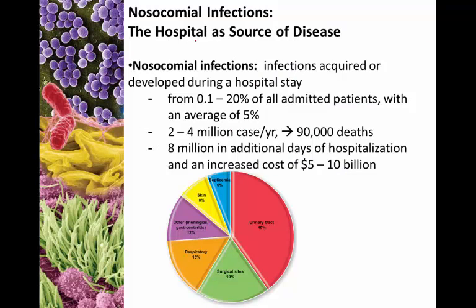The last bit I want to talk about is nosocomial infections — what we term hospital-acquired or healthcare facility-acquired infections. These are found in anywhere from 0.1 to 20% of all admitted patients, with an average of about 5% — about 1 in 20 admitted individuals will end up with a hospital-acquired infection. It's somewhere between 2 and 4 million cases per year, equating to about 90,000 deaths, 8 million additional days of hospitalization, and an increased cost of somewhere between 5 and 10 billion dollars. The most common example is urinary tract infections, accounting for around 40% of all nosocomial infections — mainly due to catheters.